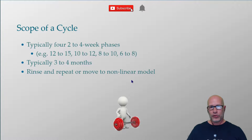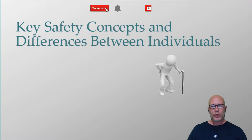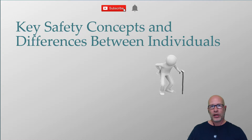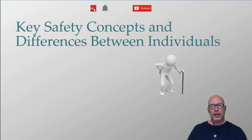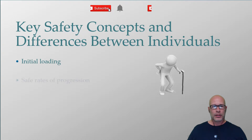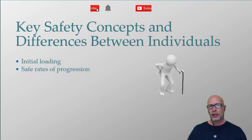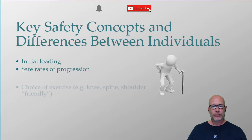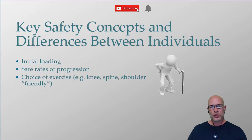It's really important to understand those are the similarities from client to client: train every major muscle group, vary intensities, train through a spectrum of repetition ranges typically between 6 and 15. But there are differences: one is how much you load them when you first start — some people can handle heavier weights in the beginning than others. Another is rate of progression — some people can progress much faster, some need to progress slower.